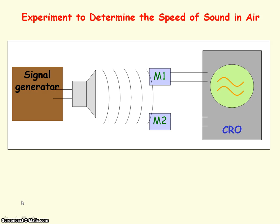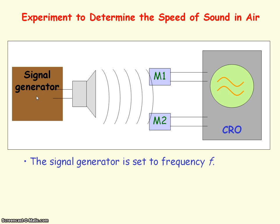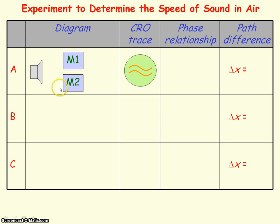We can use path and phase differences between waves to determine the speed of sound in air. Here you have a signal generator set to a known frequency F connected to a loudspeaker generating sound waves. Two microphones M1 and M2 pick up the sound waves, and an oscilloscope displays the sound waves detected by the two microphones. If initially the two microphones are at the same distance from the loudspeaker, we observe on the oscilloscope that the waves are in phase because the path difference is zero.